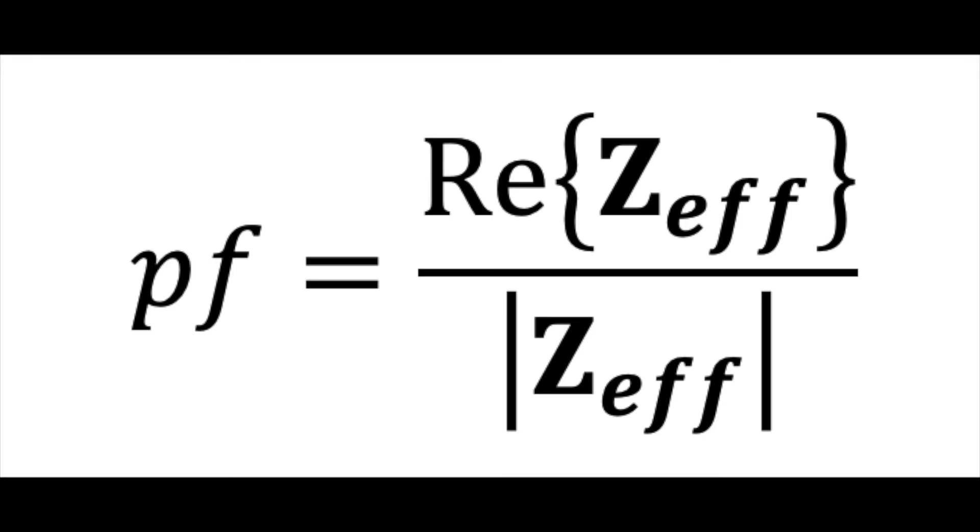Because the total impedance is going to be defined as a complex number, the real component of the impedance and the magnitude of the impedance are going to be different numbers. Generally the real component is smaller than the magnitude, so usually you'll get a power factor between 0 and 1.